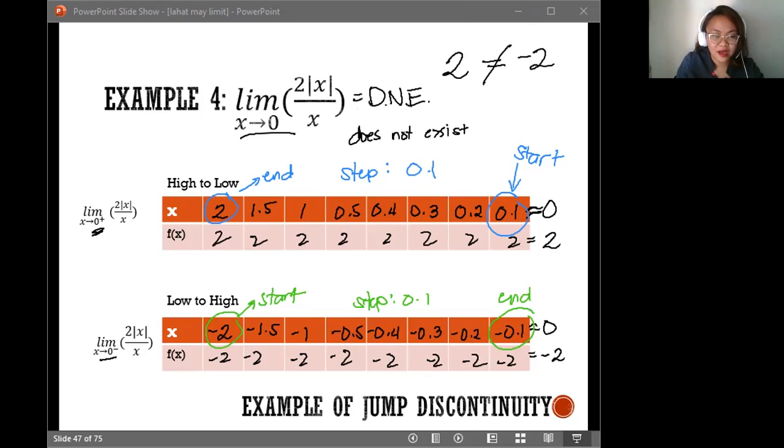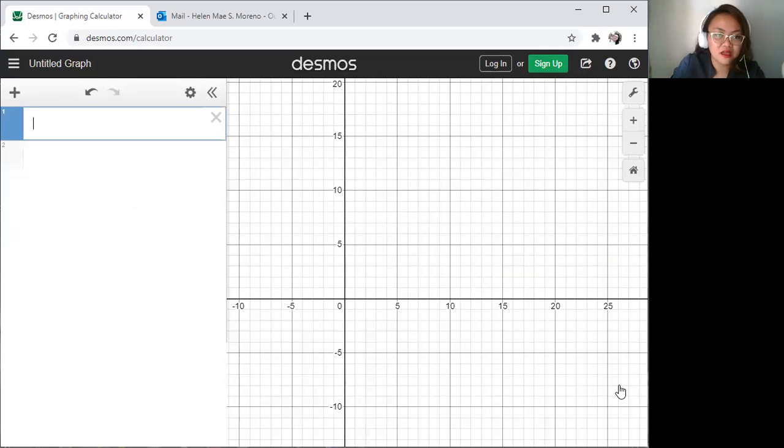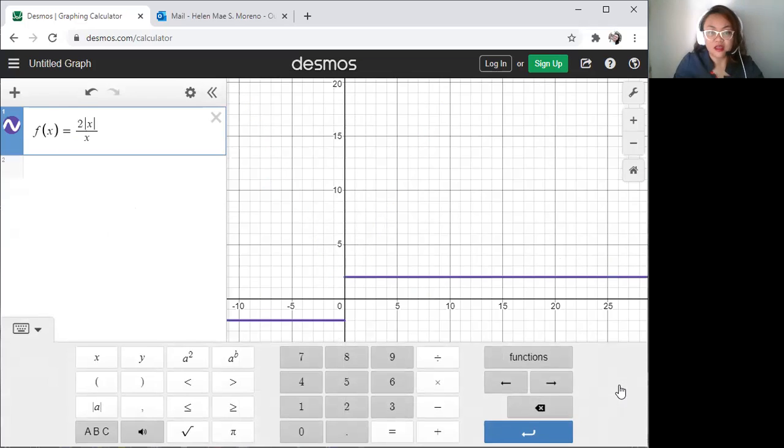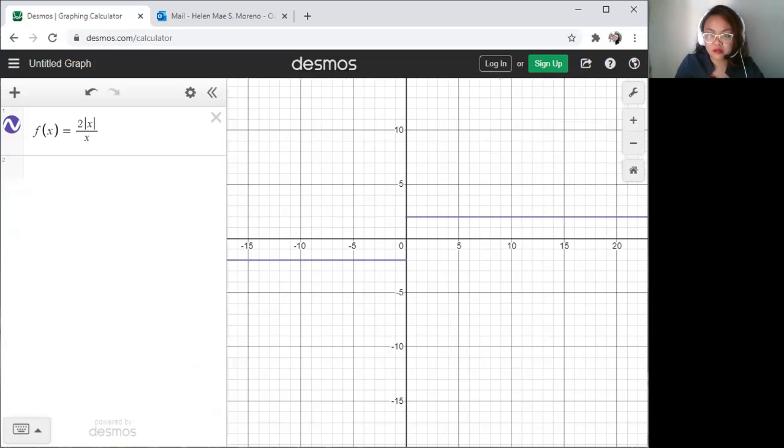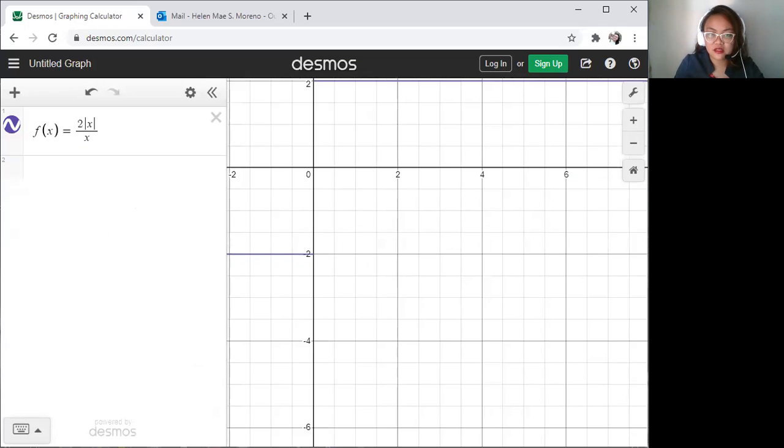Now let's look at the graph. How would the graph of this function look like? Let's type it in. We have f of x is equal to 2 times the absolute value of x all over x. And there we go, ladies and gentlemen. Let's zoom that in. And look at it closely.